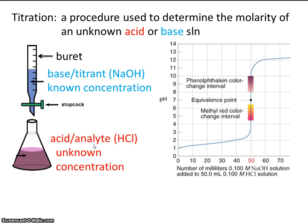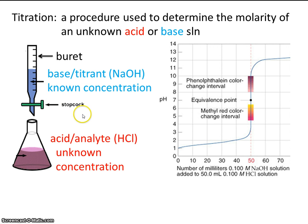Let's graphically depict the process of a titration. We want to know what the molarity of this acid is. It's an acid, so it begins with a very low pH — a pH of 1. We're going to turn the stopcock and add sodium hydroxide to the acid. As we add base drop by drop, the pH goes up and increases slowly. But then at some point, even the introduction of just a small amount of base will cause the pH to spike rapidly, so titrations have to be performed carefully and deliberately.